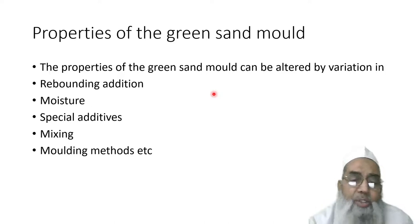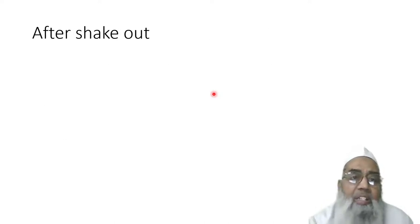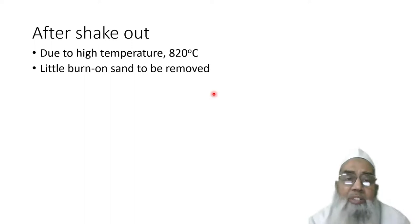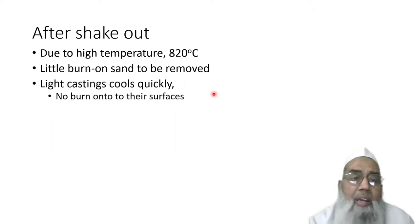Molding method can also add to the properties of the green sand mold. After shake out, due to high pouring temperature of about 1,820 degrees Celsius, there is always a little burn on the surface of the casting that is to be removed. Grey cast iron cools very quickly and therefore has little time to react with the sand at the interface.